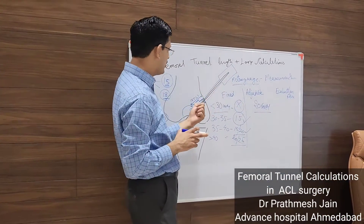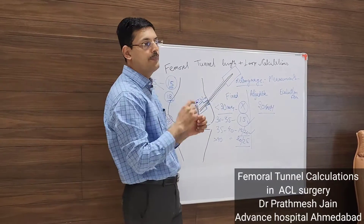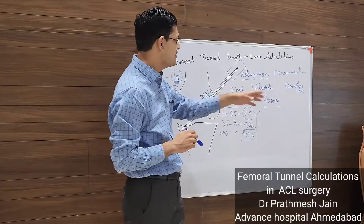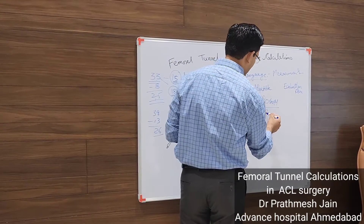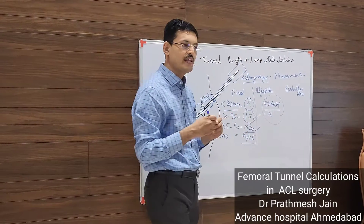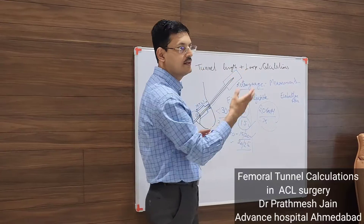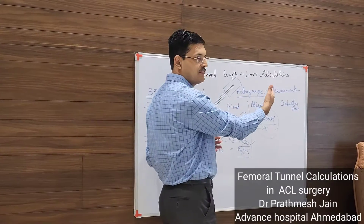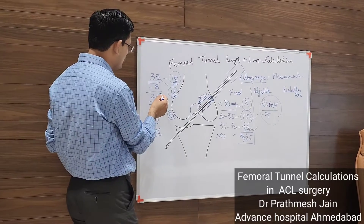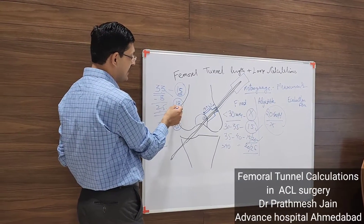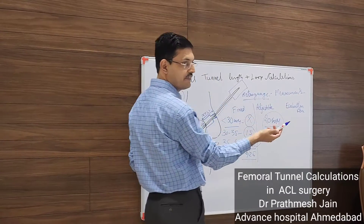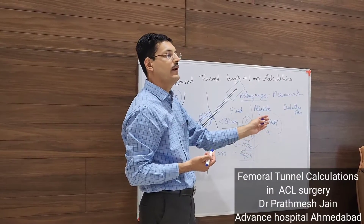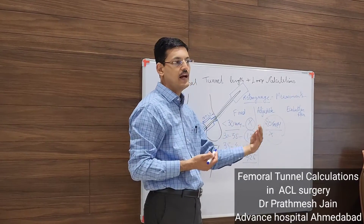You still need to calculate the tunnel length with the retro watch, as this helps you flip the button. With an adjustable loop, there is only one button size and you always drill the tunnel up to 20 or 25 mm. Whatever you drill will be filled with graft. Compared to a fixed loop, an adjustable loop leads to more complete filling of the tunnel. In this scenario, if you drill up to 25 mm with a fixed loop the graft fill is 18 mm, but with an adjustable loop it will be 25 mm — so more complete filling is achieved.